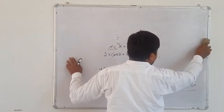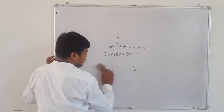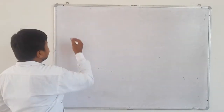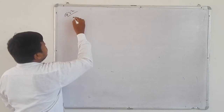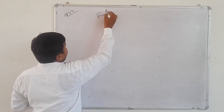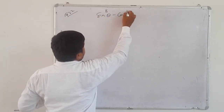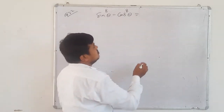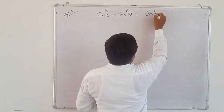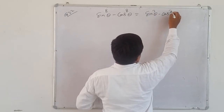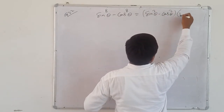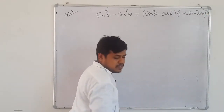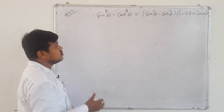Question number 22 is important — it can come in board exams, it has come many times before. Question 22: sin⁸θ - cos⁸θ. Prove it equals (sin²θ - cos²θ)(1 - 2sin²θcos²θ).